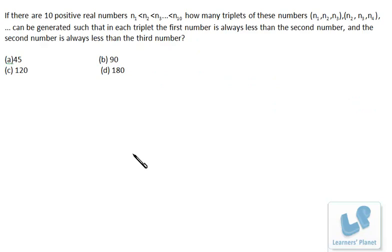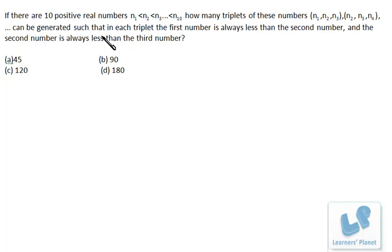Let's see this question. The question is from permutation and combination. If there are 10 positive real numbers N1, N2, N3 in ascending order, how many triplets of these numbers — like N1, N2, N3 or N2, N3, N4 — can be generated such that in each triplet the first number is always less than the second number and the second number is always less than the third number?